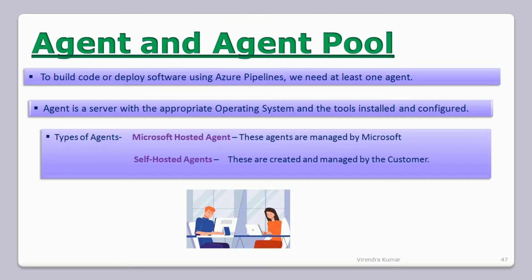Let's assume your machine — your laptop or desktop with a Windows operating system, Linux operating system, or any operating system — that is called the agent. Basically an agent is a machine which will operate to run your commands or your pipelines, where you can build the pipeline and deploy the application on a particular server. In simple words, an agent is a machine.